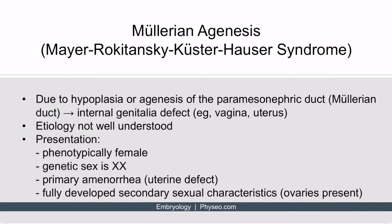Let's begin with Müllerian agenesis, also known as Mayer-Rokitansky-Küster-Hauser syndrome. This is due to hypoplasia or agenesis of the paramesonephric duct, which is also known as the Müllerian duct, hence the name Müllerian agenesis.